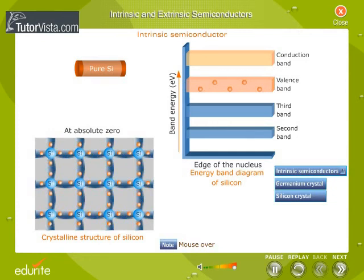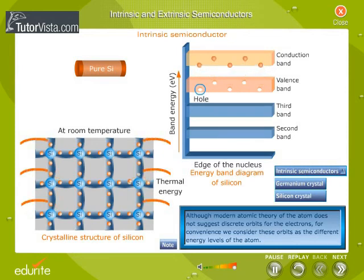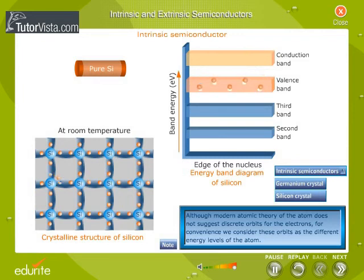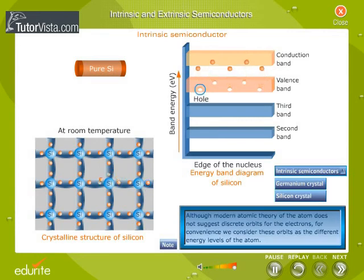Therefore, the semiconductor crystal behaves as a perfect insulator at absolute zero. At room temperature, the valence electrons absorb thermal energy and get excited. Due to absorption of energy, the valence electrons jump from the valence band to the conduction band. Whenever a valence electron moves from the valence band to the conduction band, a vacancy is created in the valence band, and such a vacancy is called a hole. Thus, an electron-hole pair is produced.